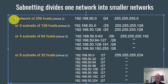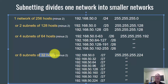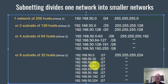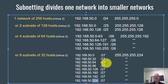If you wanted to divide this one network of 256 hosts into eight subnets of 32 hosts each, here's what it would look like. You'd have subnets at 0, 32, 64, 96, 128, 160, 192, and 224 — eight smaller networks from this one network. This works because of the binary. The binary is what makes this work.